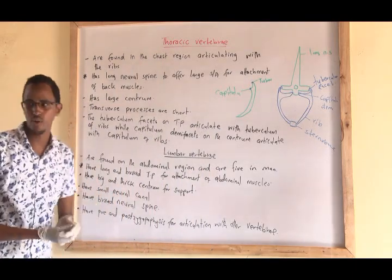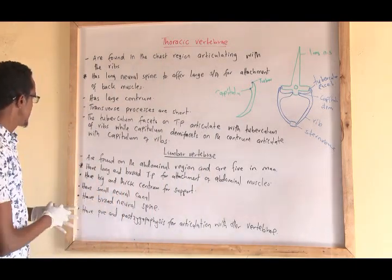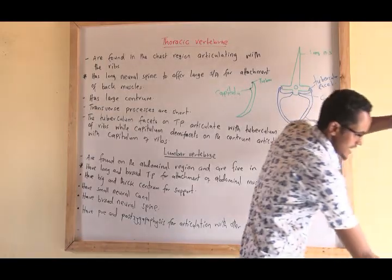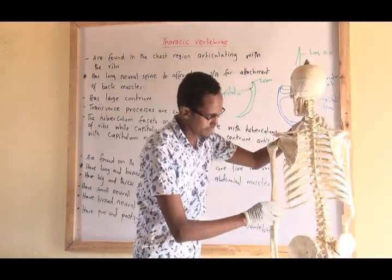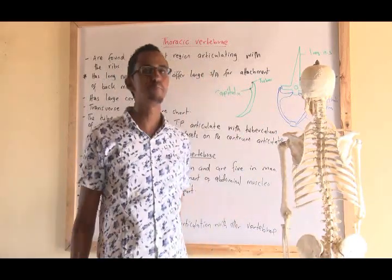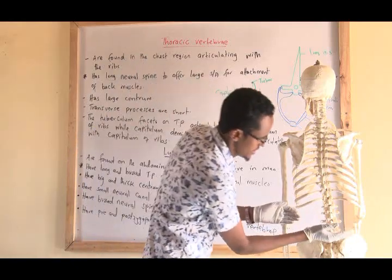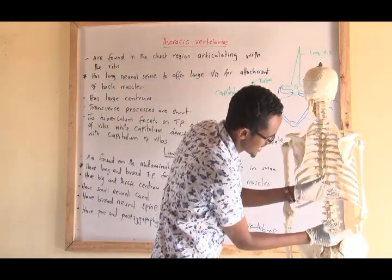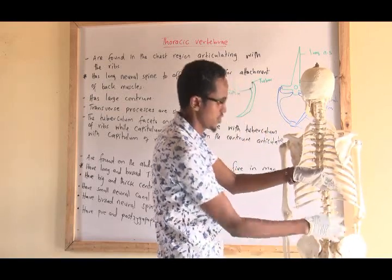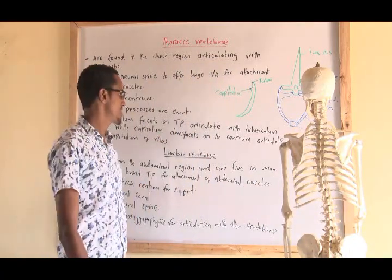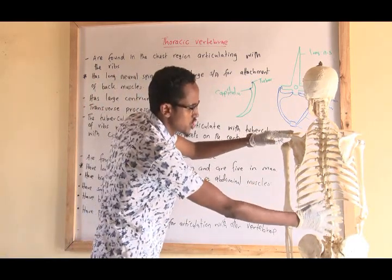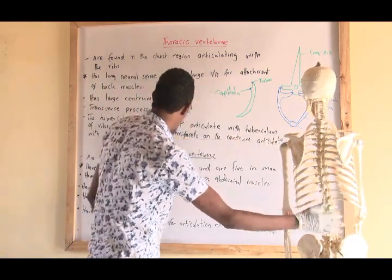What about the lumbar vertebrae? Lumbar vertebrae are bones found around the abdominal region — between the thoracic and the pelvic region. For the case of man, they are five in number, found around the abdominal region.